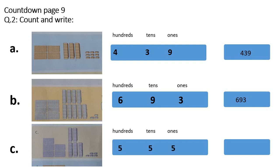Now we will do part C. Count with me. Hundreds: 1, 2, 3, 4, 5: 500. How many tens? 1, 2, 3, 4, 5: 5 tens. And how many ones? 1, 2, 3, 4, 5: 5 ones. So the answer is 555. Parts D, E, and F you will do at home.